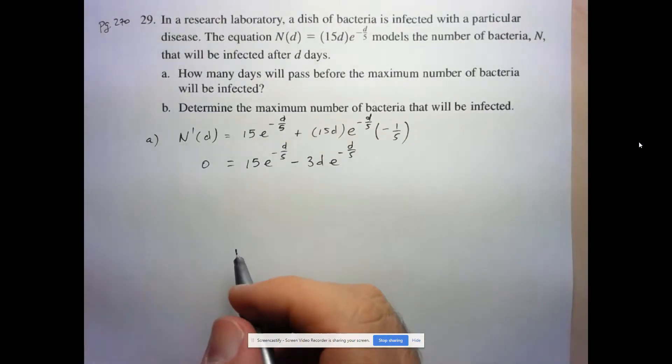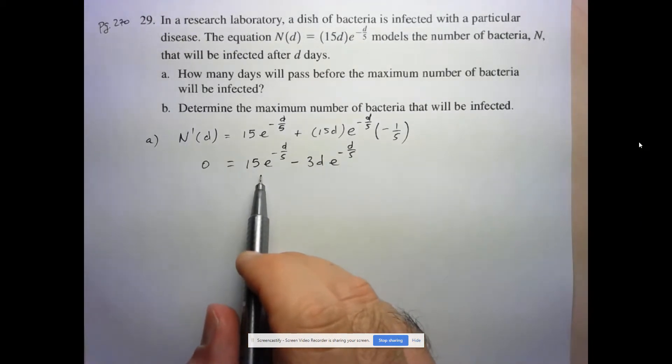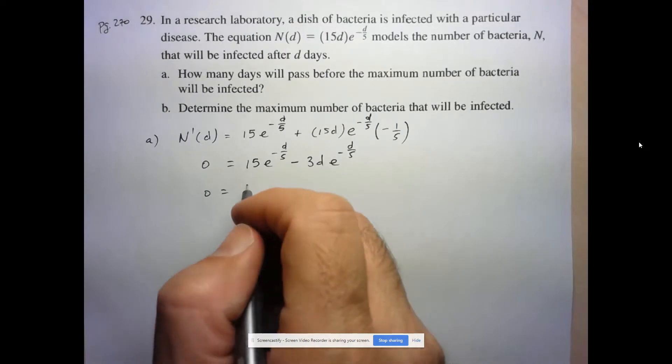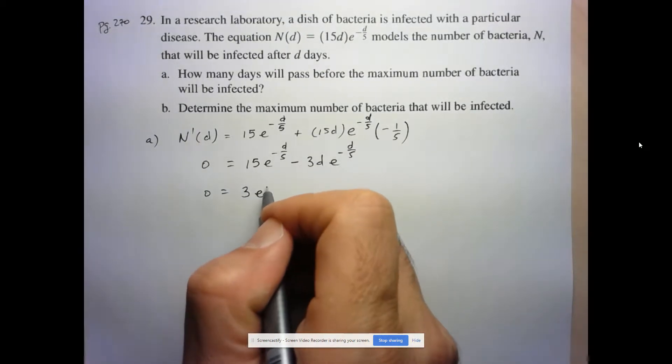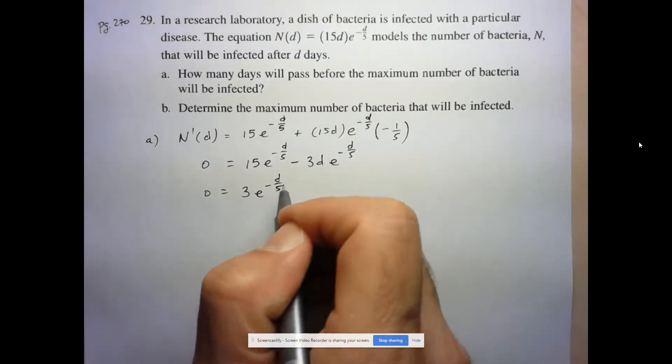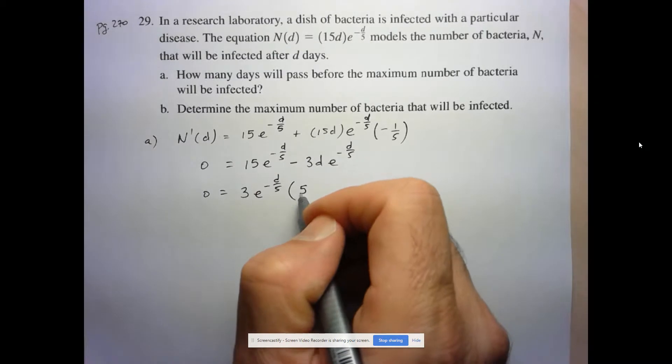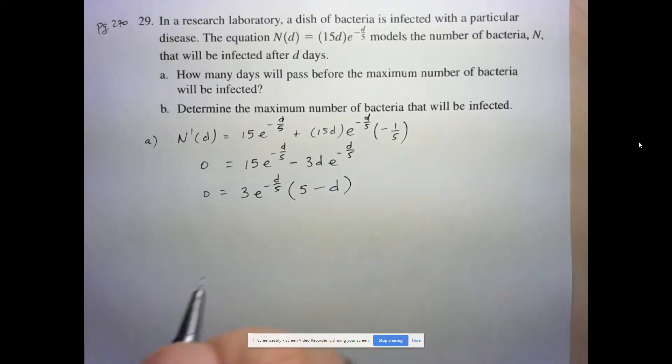The thing you want to look for here is to hopefully put it in factored form. And we see that we do have some common factors. So we have a common factor of 3, and more importantly, we have the common factor of E to the negative D over 5. So in the end, we're just left with 5 minus D.